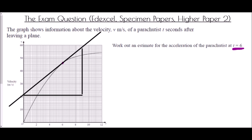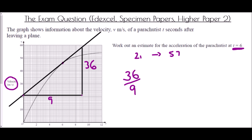We find the change in velocity: it goes from 21 to 57, giving a change of 36 meters per second. In terms of time, we go from zero up to nine seconds. So we calculate 36 divided by 9, which gives four meters per second squared. At that point the parachutist was accelerating at four meters per second squared.